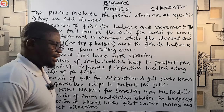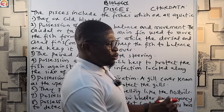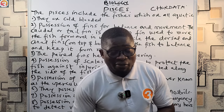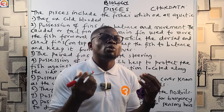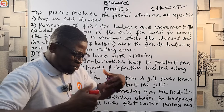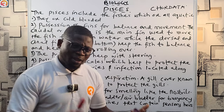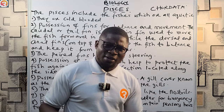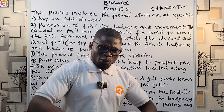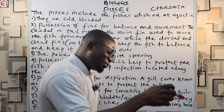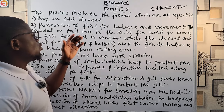Fishes are cold-blooded. That doesn't mean they have cold blood. What it means is that they do not have the ability to regulate their own body temperature. Their body temperature is dependent on the temperature of the water or the environment around them.